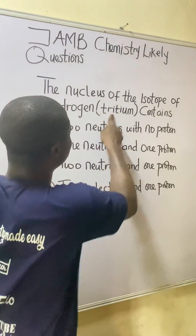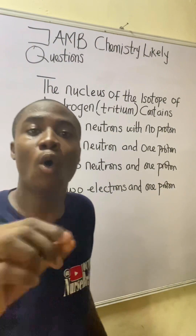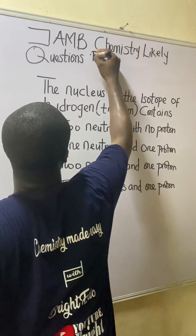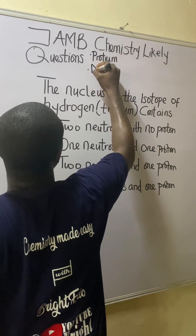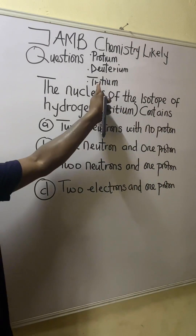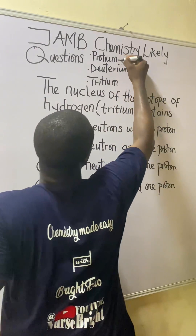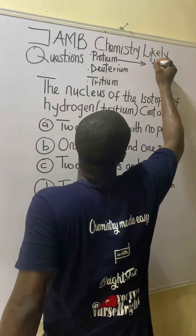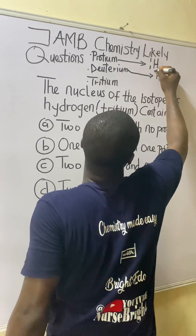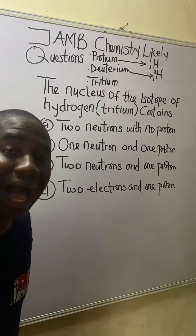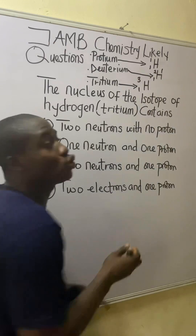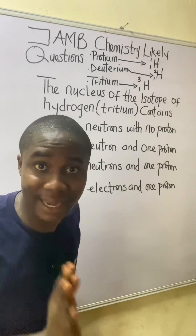We need to know the respective symbols of the isotopic forms of hydrogen. The first isotope, protium, has the symbol H with mass number 1 and atomic number 1. Deuterium is H with mass number 2 and atomic number 1. Lastly, tritium — which is what this question asks about — is H with mass number 3 and atomic number 1.